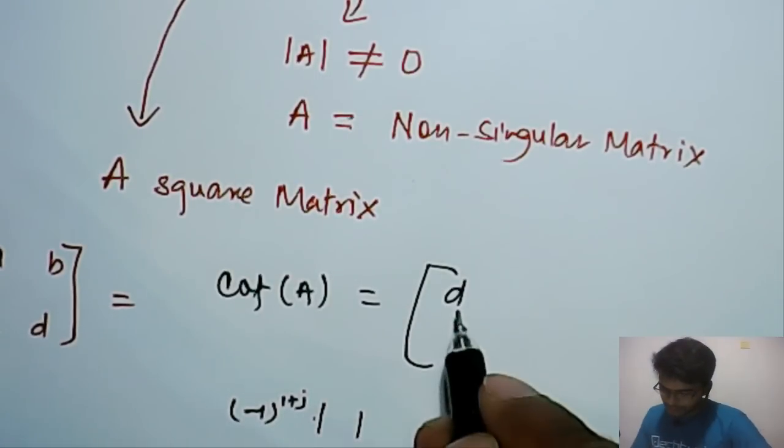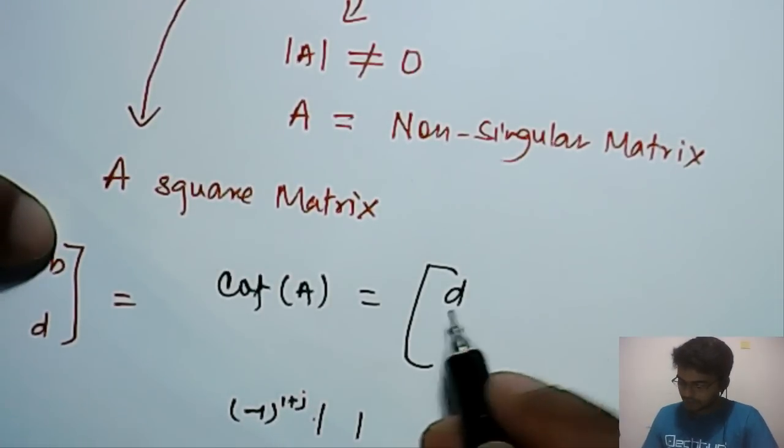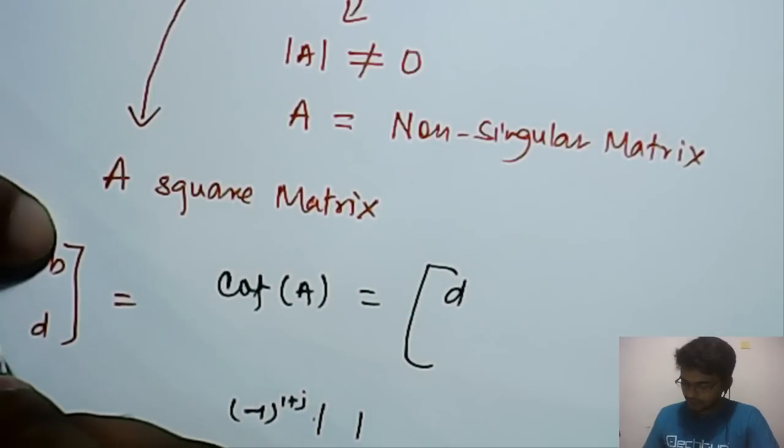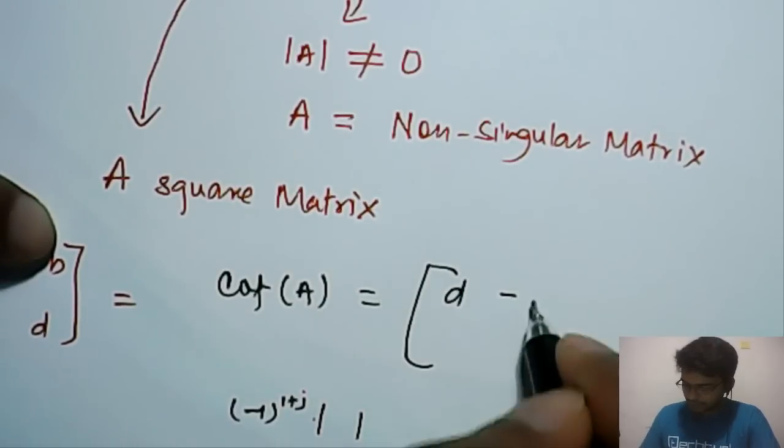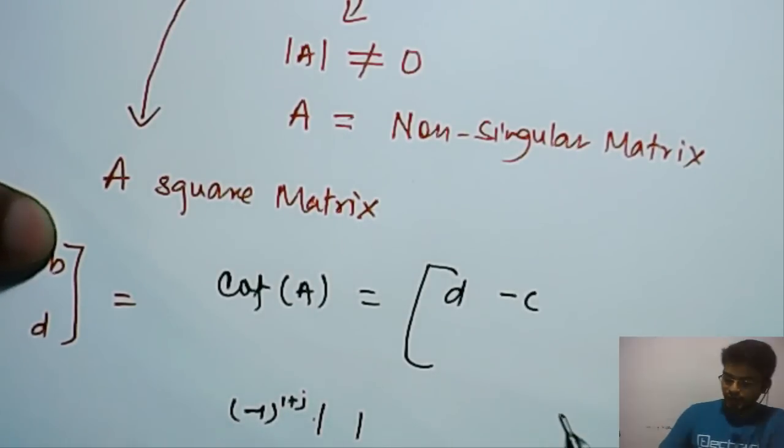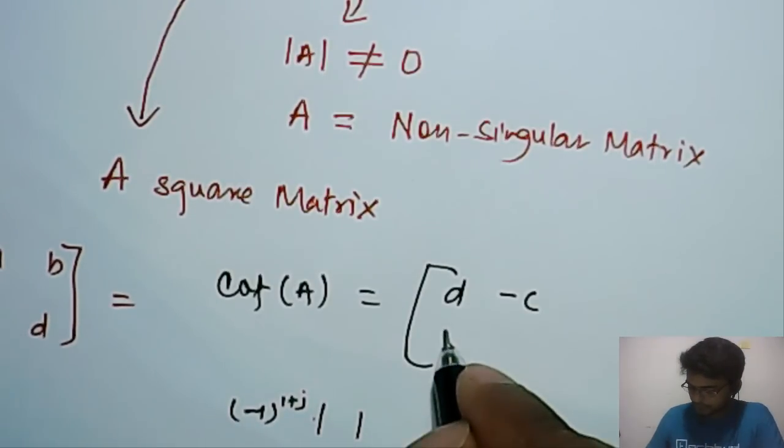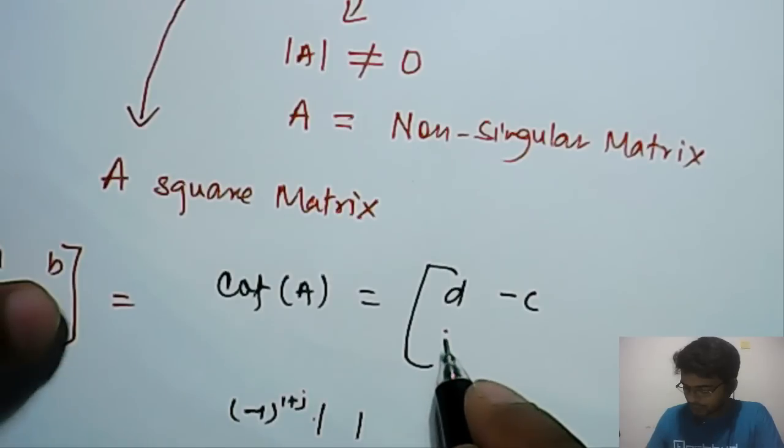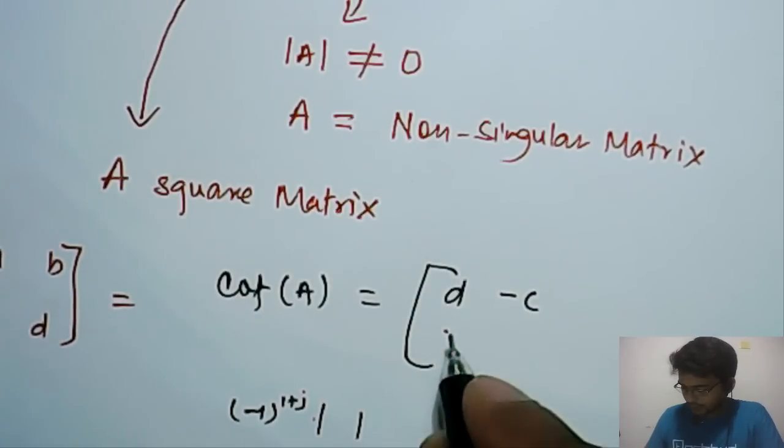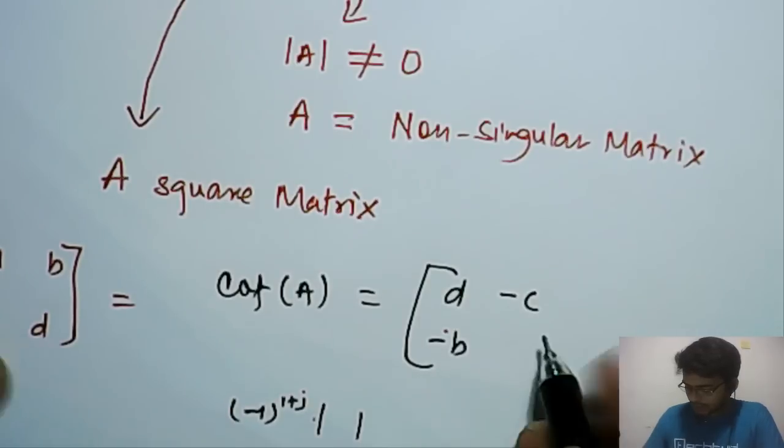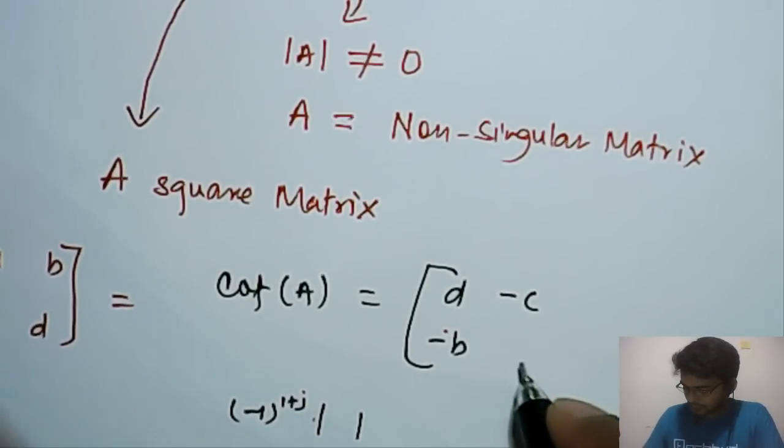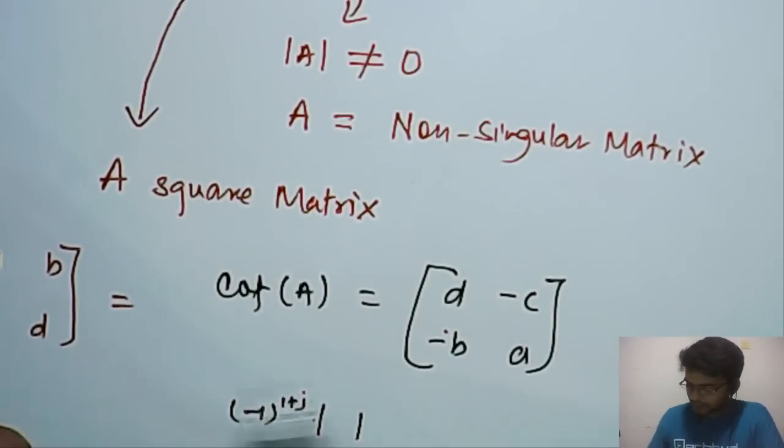So, this will be D. Again, for B, this will be here, it will become minus C. And now, for C, it will become, it is 1, 2. So, it will become again minus B and then for D, it will become A.